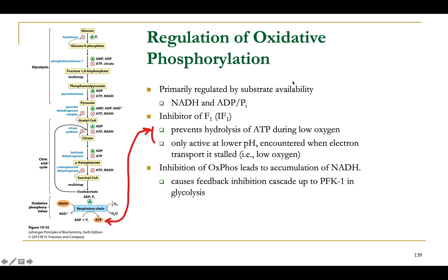There are several ways the oxidative phosphorylation system is regulated. The first and most straightforward way is substrate availability. Normally in a cell, almost all adenosine nucleosides are present in the triphosphate form as ATP, leaving very little ADP available. This generates a rate-limiting step that limits ATP production by ATP synthase, allowing regulation of oxidative phosphorylation and energy production over a wide range — approximately 10-fold.